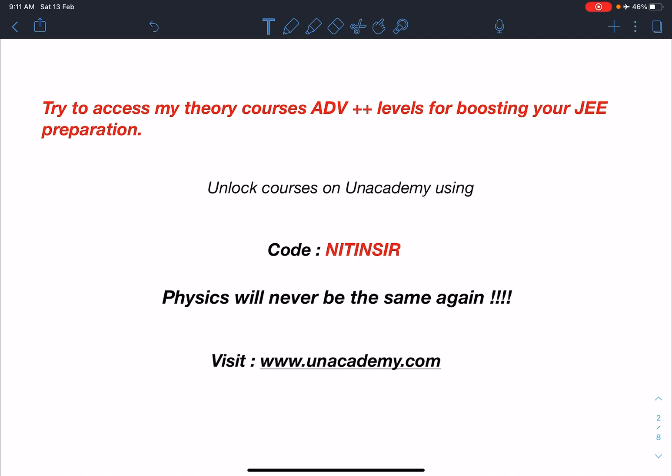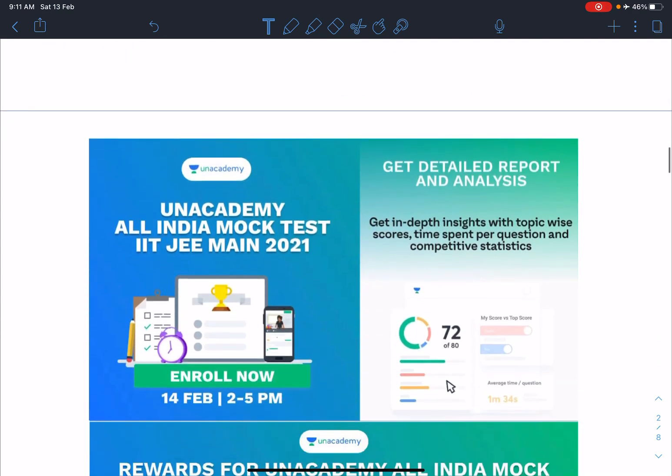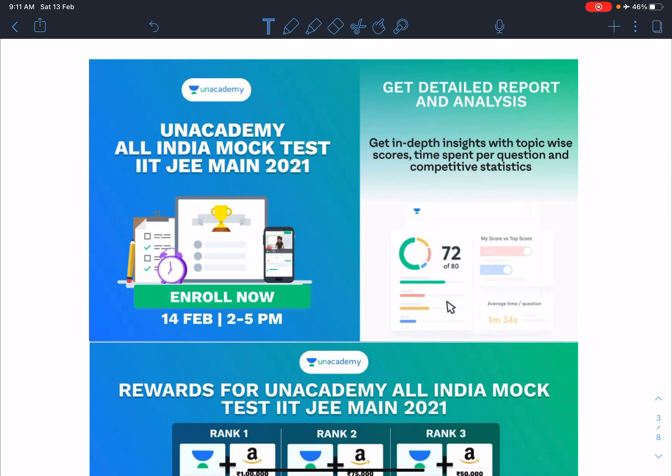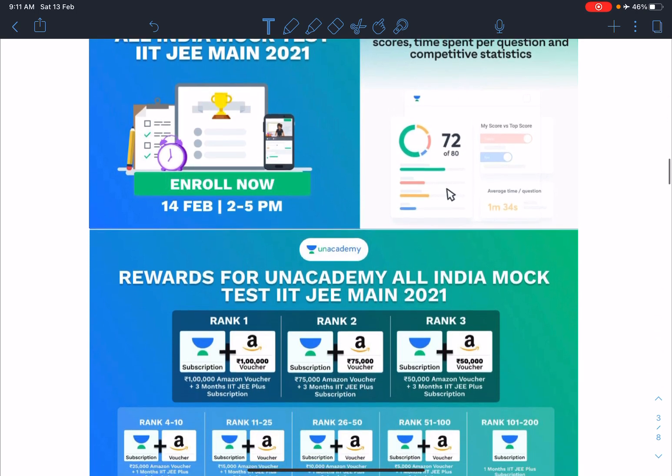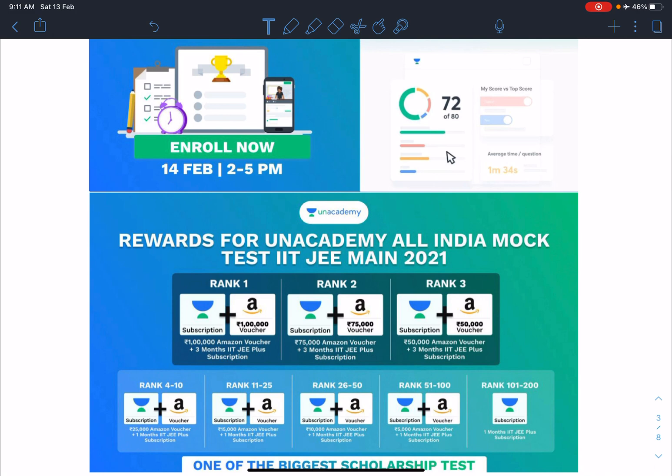For more information you can visit www.unacademy.com. Guys, trust me, physics will never be the same again. Very important information: on the 14th there is an All India Mock Test for JEE Mains 2021 from 2 to 5 PM. A lot of prizes and rewards are present. The top rank one will be getting a 1 lakh rupees Amazon voucher and a three months IIT JEE Plus subscription. For ranks up to 200, they will be getting some kind of reward.